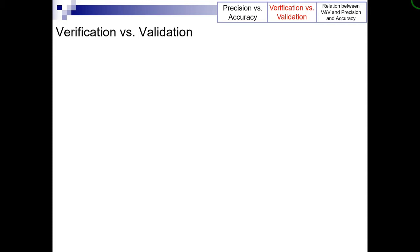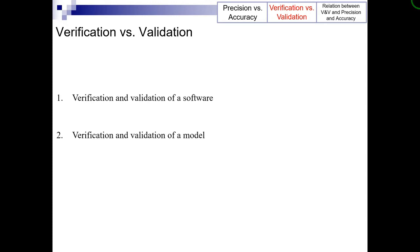There are two types of verification and validation: verification and validation of a software, and verification and validation of a model. The verification and validation of a software is required when a computer program or code is the end product, while the verification and validation of a model is needed where the end product is a predictive model.